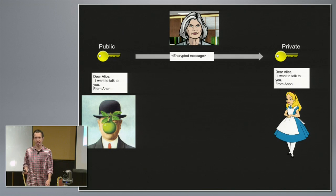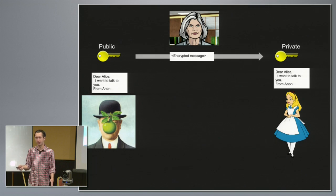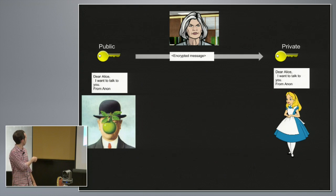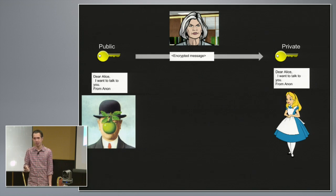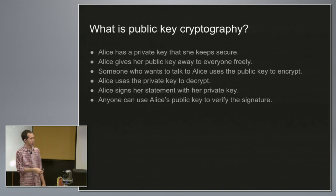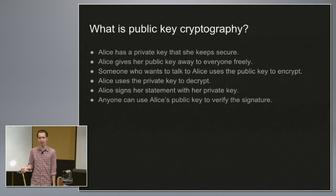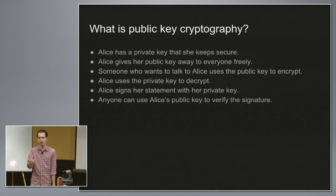Here is a standard public key encryption setup. You have a key pair: a private key that only Alice knows, and a public key that everybody knows, disseminated to everyone. Assuming that someone knows that that public key is tied to Alice, someone can use the public key to encrypt a message and send it to Alice, and only Alice can read it. If Alice wants to make a signed statement, she can sign it with her private key, and then anyone with her public key will be able to verify that she was the one that made that statement.